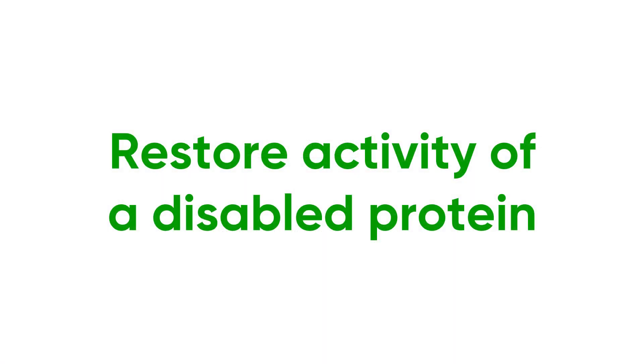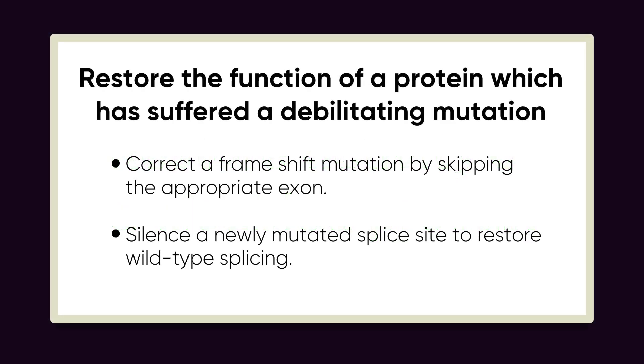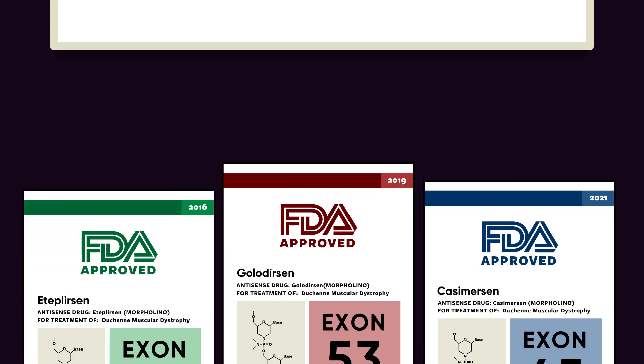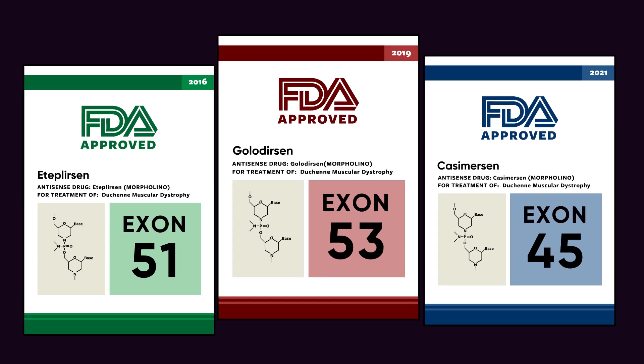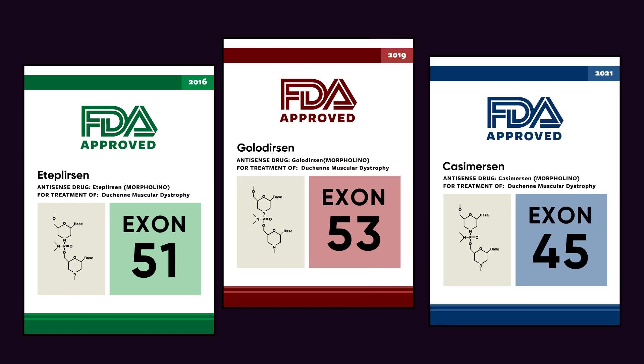Restore activity of a disabled protein. The following techniques can restore the function of a protein which has suffered a debilitating mutation. They only work in specific cases, but can be extremely useful when they do work. Several FDA-approved morpholino drugs have been developed exploiting this mechanism.